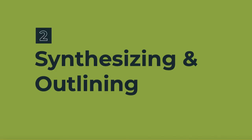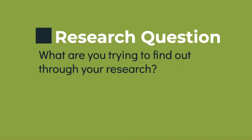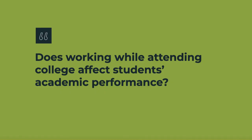We're going to turn now to synthesizing and outlining, which are helpful in the process of writing a literature review, particularly with getting organized. Start by writing your research question down. If your research question has changed, that's fine — write down your current one. If you're not sure, think about what you're trying to find out through your research. For example, my research question is: does working while attending college affect students' academic performance? Pause the video to write down your research question, and if completing this for credit, enter it in question 5 in the quiz.